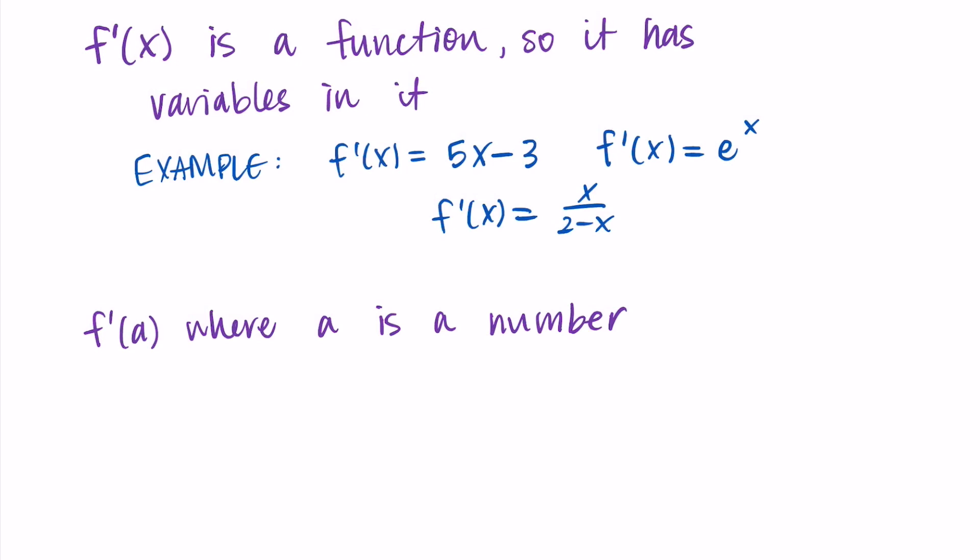The value that we get out of this is going to be a real number. When we substitute a into the derivative, we get a number out. It's like we're plugging a into the function—we should get a constant number out.